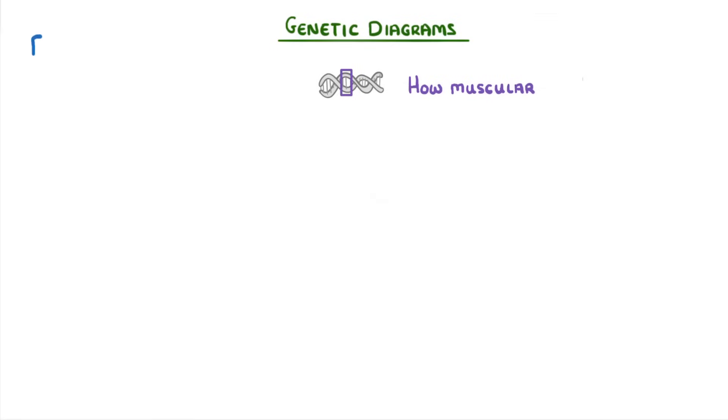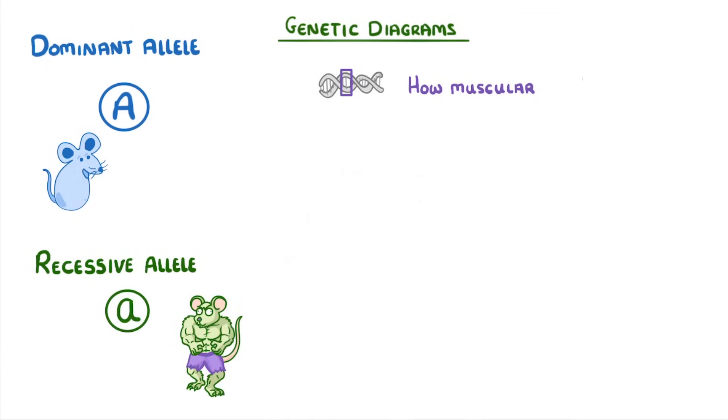Let's suppose that the dominant allele, which we can show as a capital A, codes for normal mouse with average muscle while the recessive allele, which would be a lowercase a, will code for a muscular mouse.